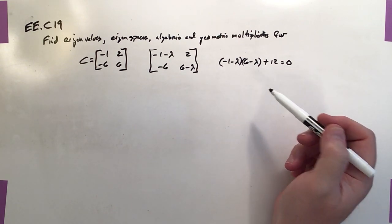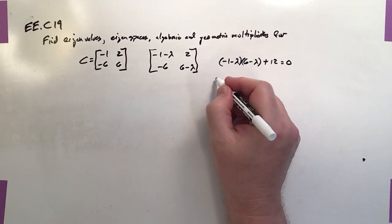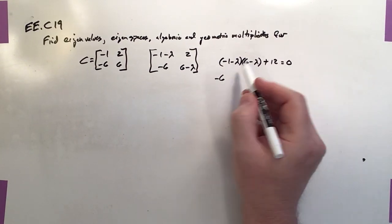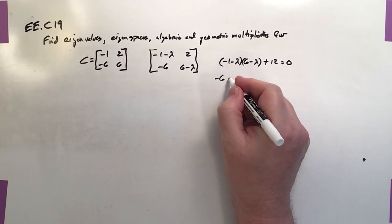Okay, so let's do the expansion. This is going to be negative 6 minus 6 plus 1.